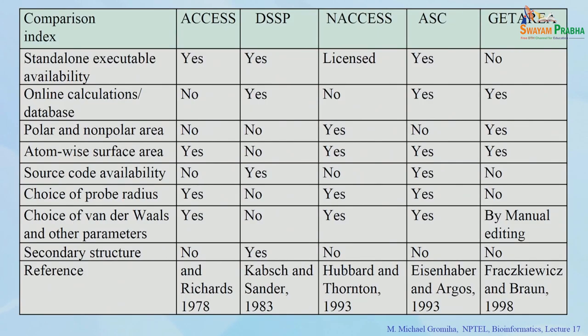Several algorithms are available to calculate accessible surface area for all atoms and residues in a protein. Major programs include ACCESS (developed in the 1970s), followed by DSSP, NXS, AAC, Gitteria, and others. Each has advantages and disadvantages. DSSP is available as standalone software and easy to use, but it gives accessible surface area only at the residue level, not per atom. NXS gives atom-wise accessible surface area, but requires a license — you must request and obtain it before use.